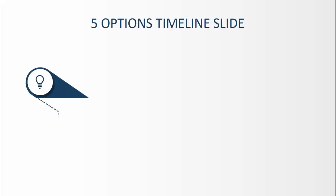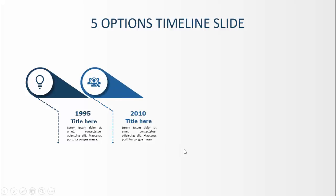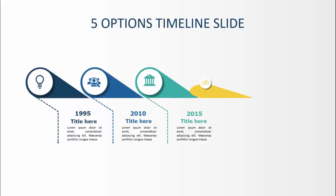In today's tutorial I'm going to show you how to create a five options timeline slide in PowerPoint. When I click, the first option comes up - I've added a design at the back, one icon with an oval shape, and one arrow. You can add the year, title, and detailed text. When I click it shows the second option with a different color combination, then the third, fourth, and fifth options.